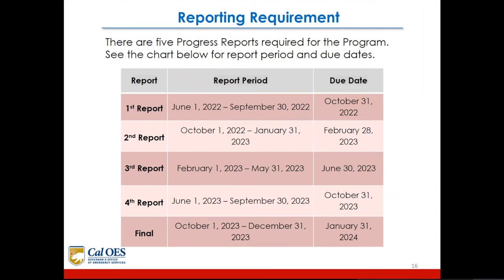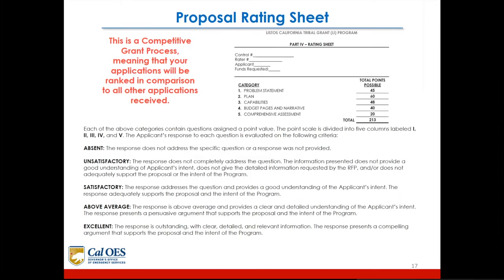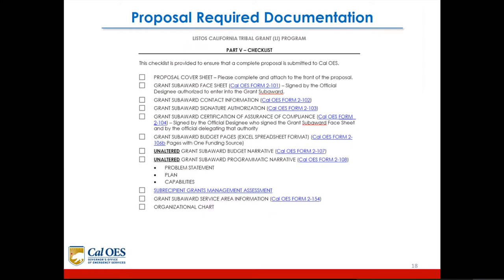There are five progress reports required for the program. See the chart in your RFP for report periods and due dates. The proposal rating sheet reflects that this is a competitive grant process, meaning applications will be ranked in comparison to all other applications received. This is also located in the RFP. There is also a checklist on the last page of the RFP to help you know which forms need to be submitted, which you can check off as you complete them.